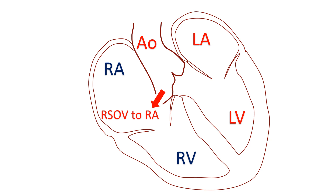Rarely, rupture can occur into the left heart chambers, pericardium, pulmonary artery, or superior vena cava. Rupture into the pericardium can cause cardiac tamponade.